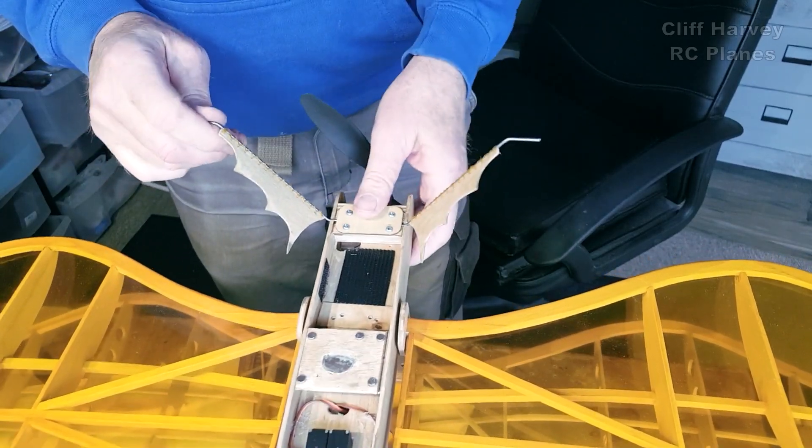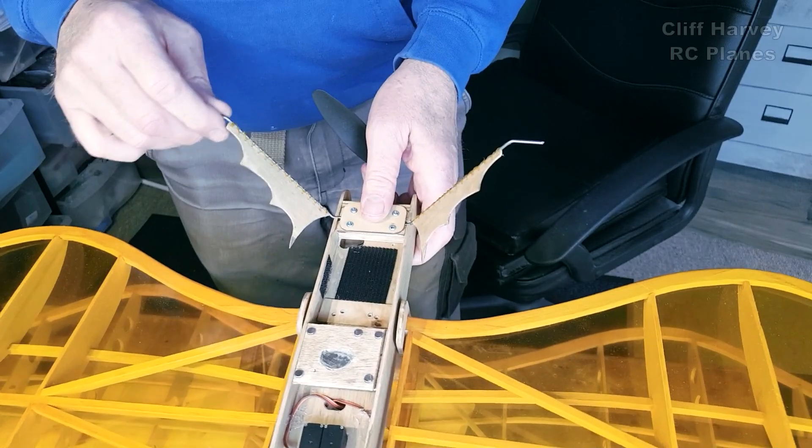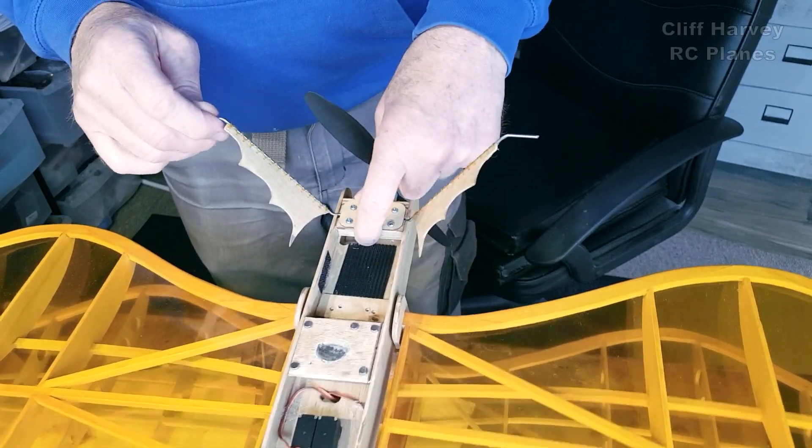There's the undercarriage legs. Pretty strong, pretty flexible. They're probably going to bend but easy to bend back, but they're not going to break out. That's the thing.